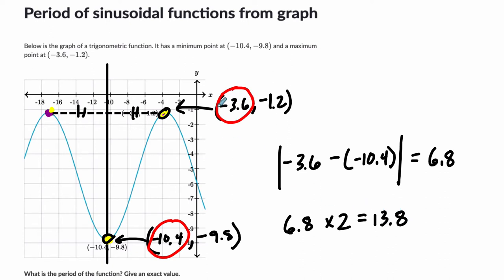So we multiply 6.8 times 2, and we get our period is 13.8. What does that mean? Whatever units we have on the x-axis, it takes 13.8 of them to complete one cycle of your sine or cosine wave.